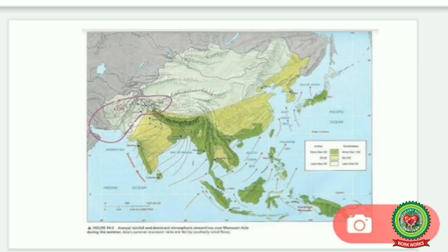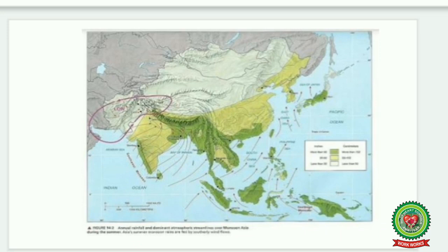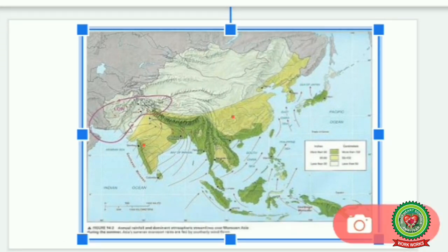The parts near the equatorial region, and the parts of India and China colored with dark green, are the areas that receive the most rainfall. The western part of India receives more than 200 centimeters of rain. The next category includes South and Central China, India, Japan, and Northern China and Korea.